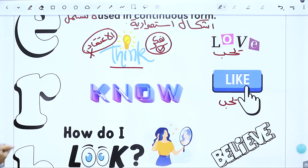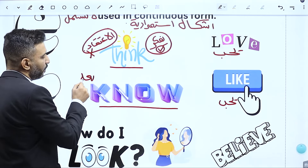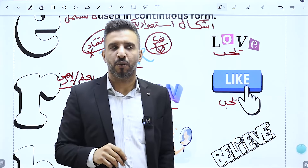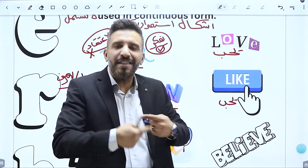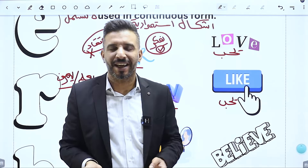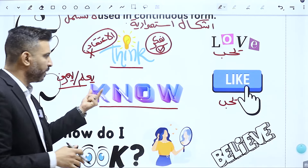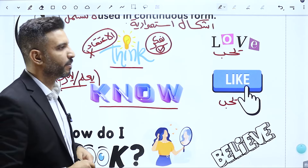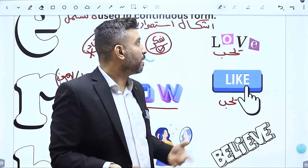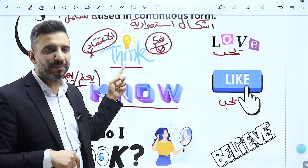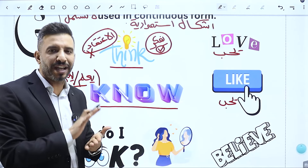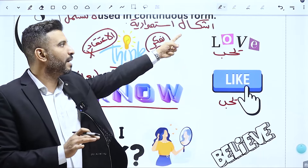الفعل 'know' بمعنى يعلم أو يعرف: ما في شيء اسمه 'قاعد بعرف'، يا بعرف يا ما بعرفش انتهى الموضوع. فالفعل 'know' لا يقبل الاستمرارية، ممنوع يأخذ ING. ما بزبط أقول 'I am knowing' ولا 'I am thinking' بمعنى الاعتقاد. هذول أفعال state verbs: ممنوع يأخذوا ING، ممنوع تستعملهم كأشكال استمرارية.